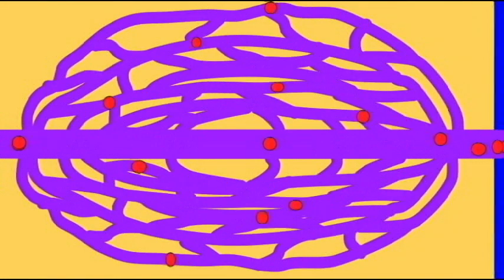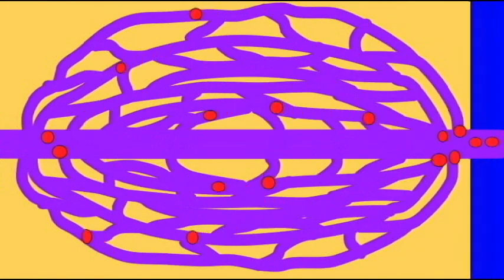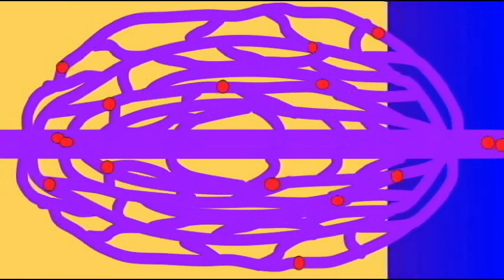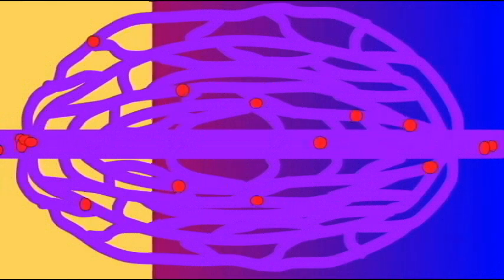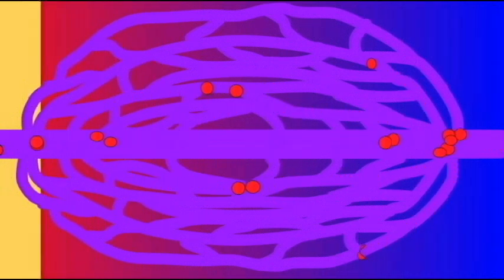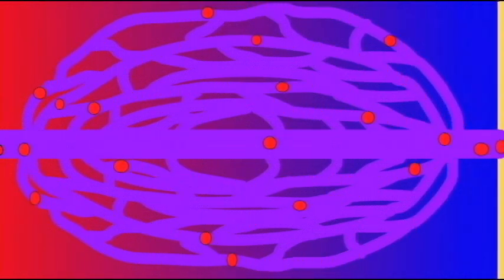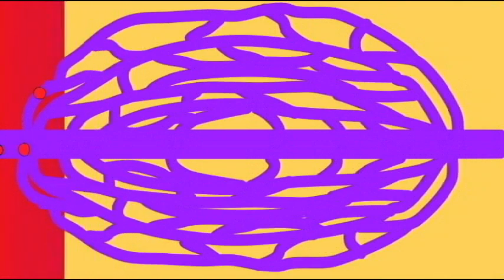In pulmonary capillaries, oxygen diffuses from the alveoli, going from an area of high partial pressure to low. This oxygen not only dissolves into the blood itself, but also is bound to hemoglobin. Thus, the blood which reaches the pulmonary capillaries in this deoxygenated state, depicted here in blue, becomes red and becomes oxygenated.